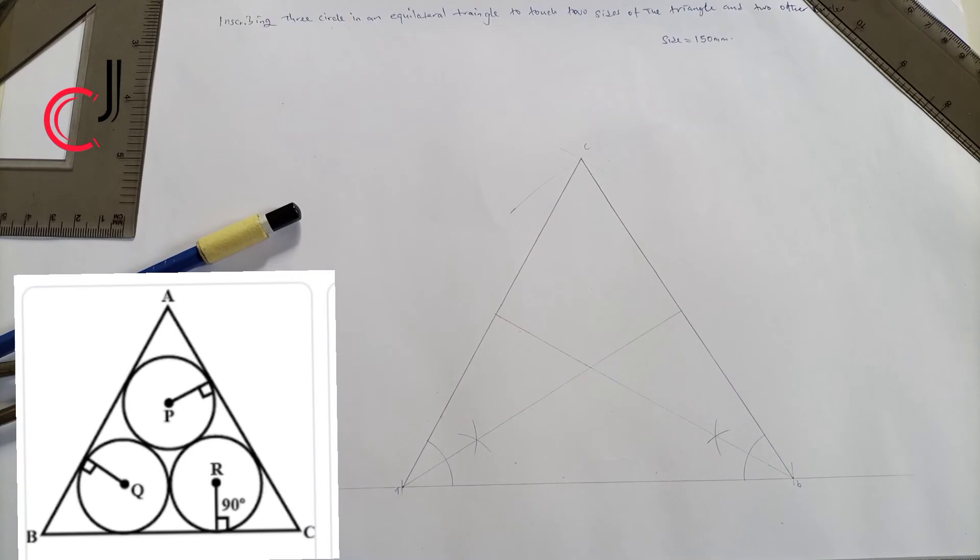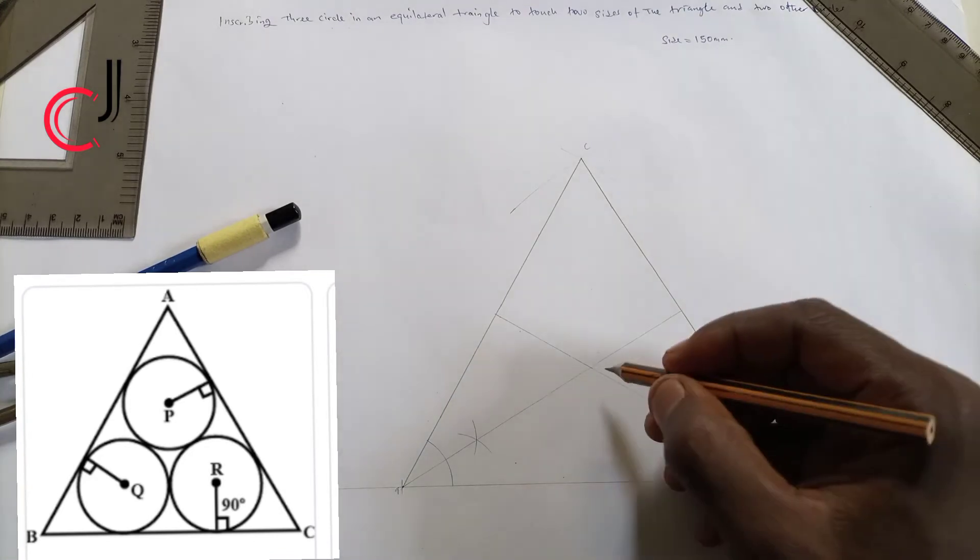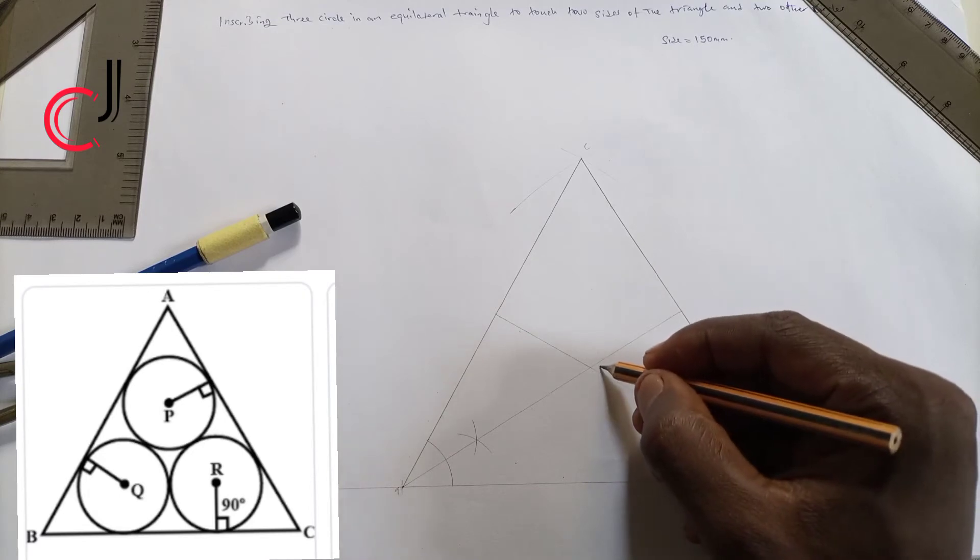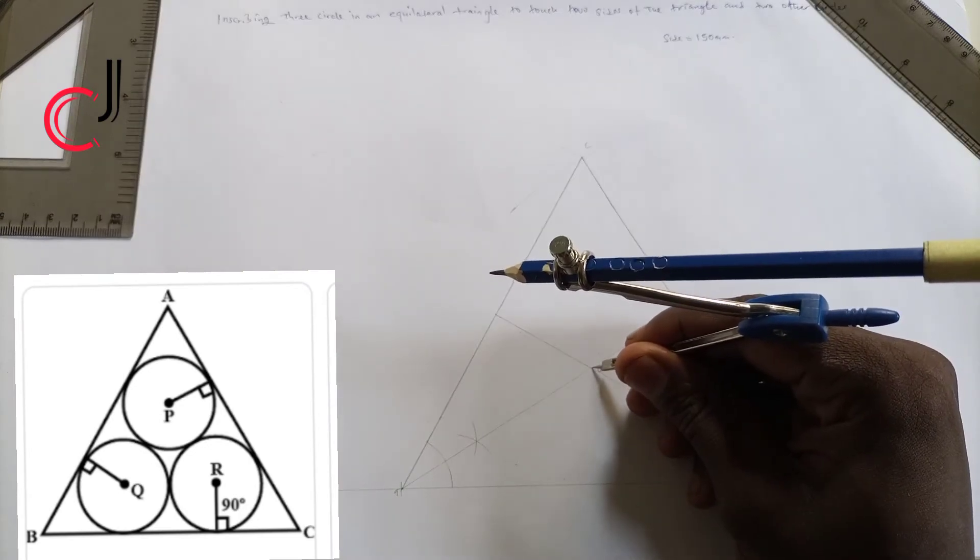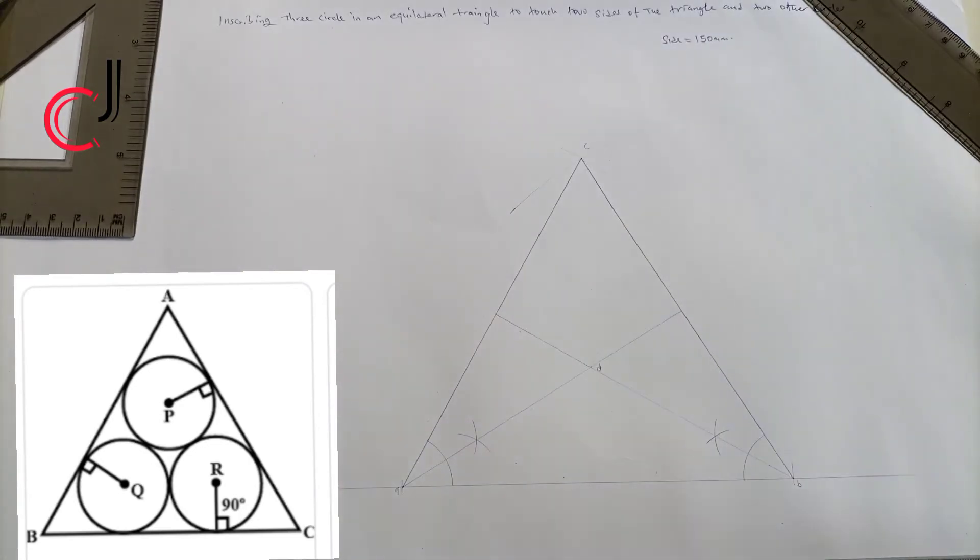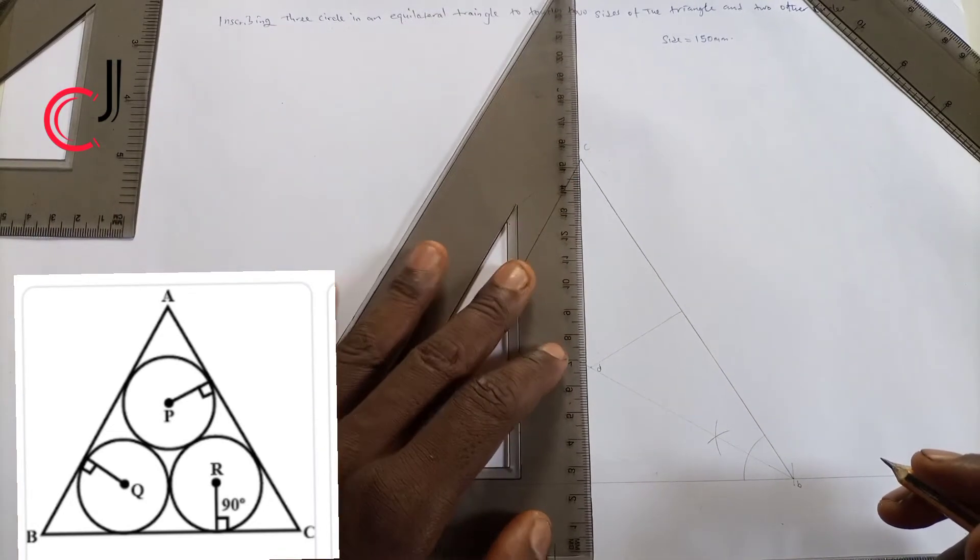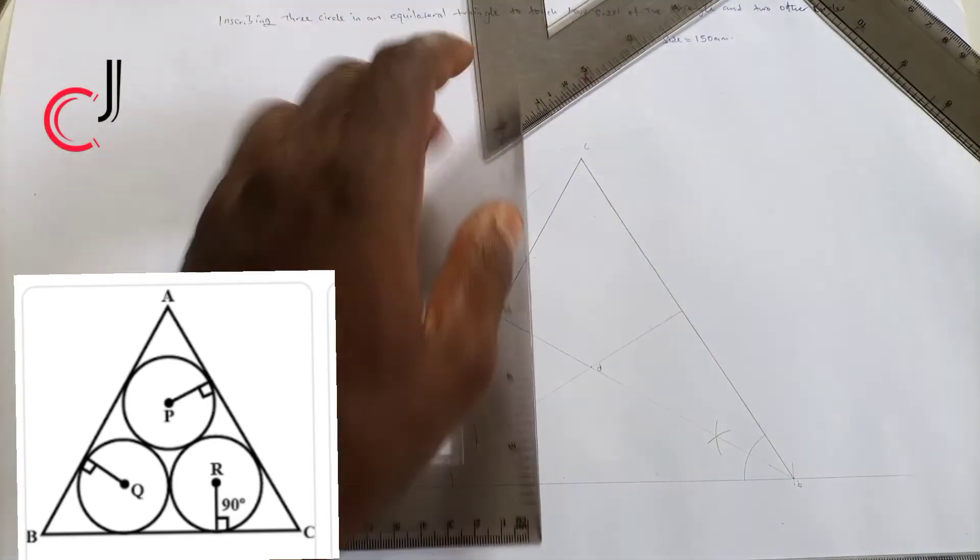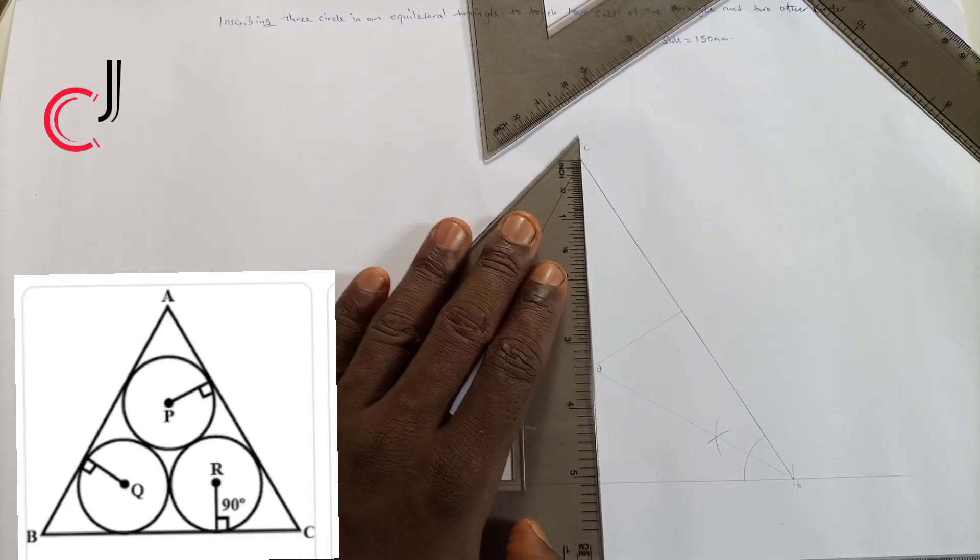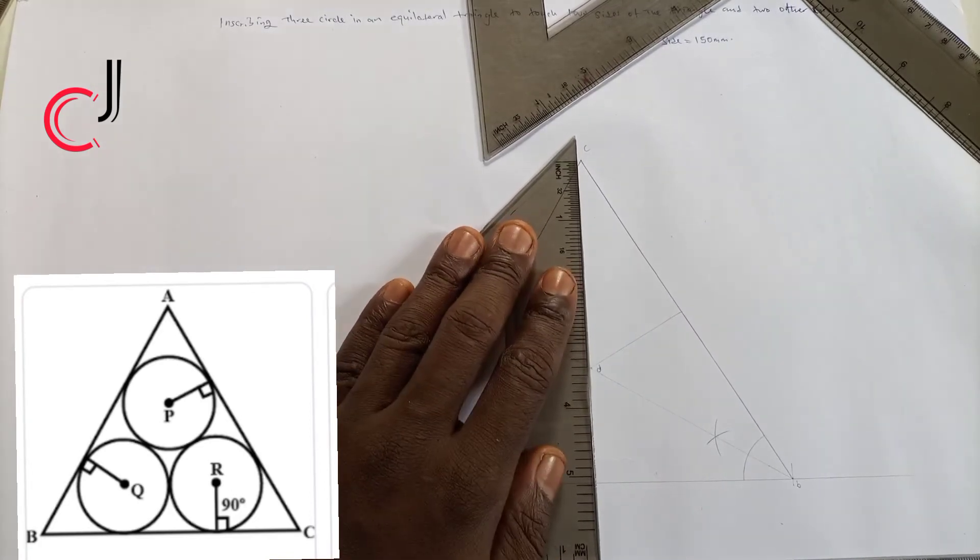So name this point, point D. You can see it. So join point C to D, touching line AB properly.